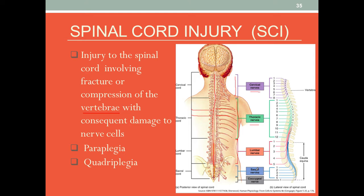For example, if the injury occurs in the lumbar region, we may see people with paraplegia — they have no movement in their lower extremities and would not be able to walk. If the injury is higher, up in the cervical region, we may see people with quadriplegia, meaning they lose the use of all four limbs — both arms and legs.